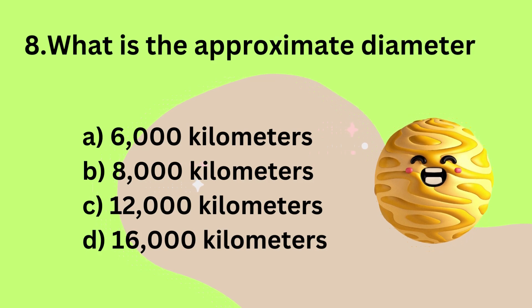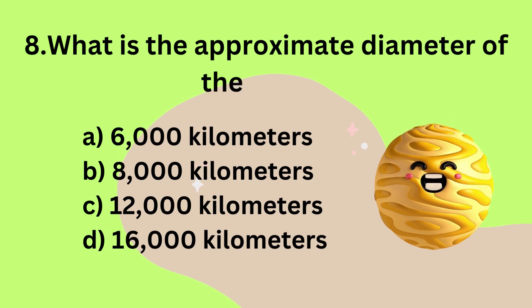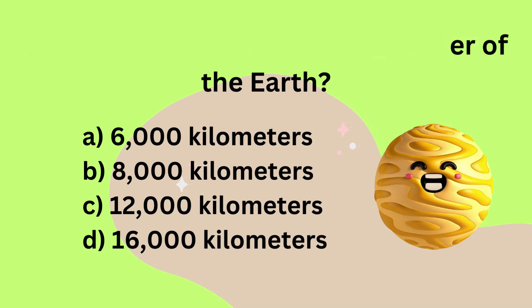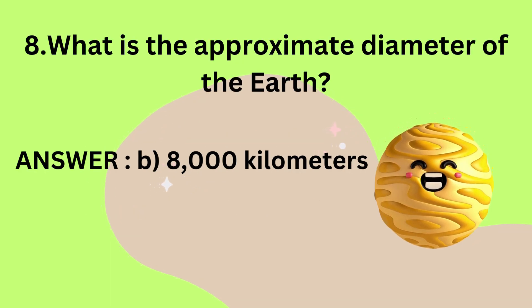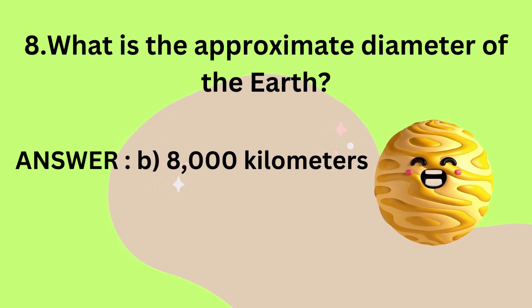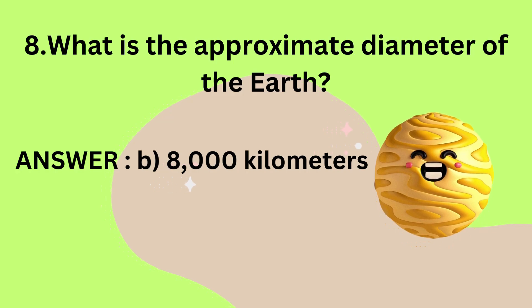What is the approximate diameter of the Earth? 8,000 km.